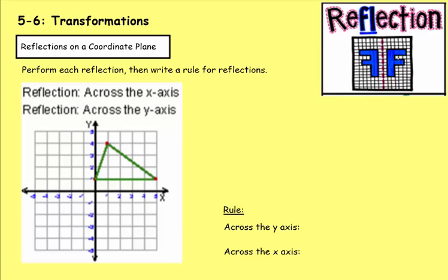Now we're going to work on reflections. As you might guess, reflections are very much like looking into a mirror — the shape takes the same space on the other side of the axis but looks backwards. We'll reflect across the x-axis first. The x-axis runs left to right. Flipping across it, a point one away stays one away on the other side, a point four away stays four away, giving us a mirror image.